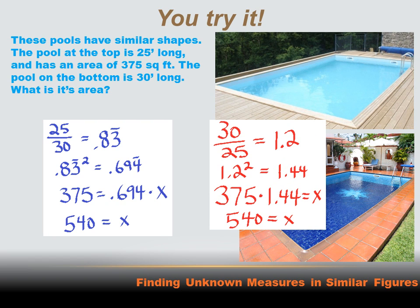There's another way we could do this. Instead of taking the ratio of the smaller side to the larger side, we take the ratio of the longer pool to the shorter pool: 30 divided by 25 gives a growth ratio of 1.2. Because we're talking about square feet, we square 1.2, which equals 1.44. Then we multiply the area of the smaller pool by 1.44 to get the area of the larger pool. 375 times 1.44 gives us a larger number, which makes sense since the bottom pool is larger. And we get 540 — the same answer.